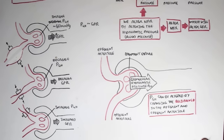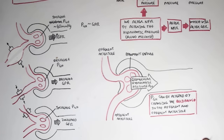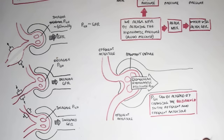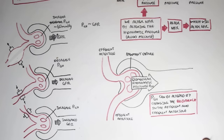That concludes this video on glomerular filtration. This video looked at filtration — the first step in urine production. In the next video we'll look at reabsorption, how the filtrate gets reabsorbed back into the blood, which is the second step of urine production. Thank you.